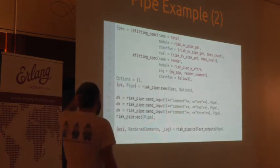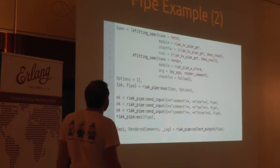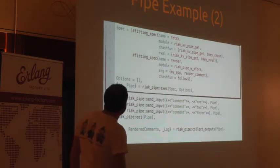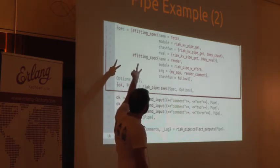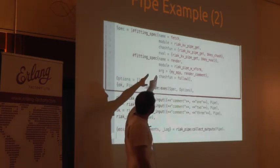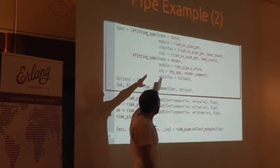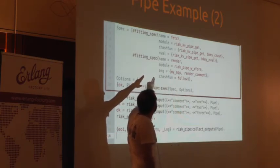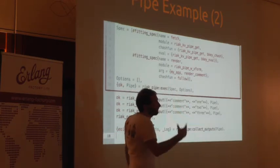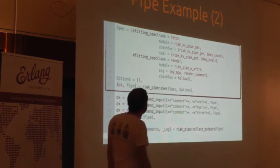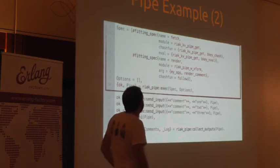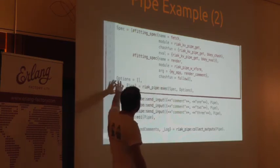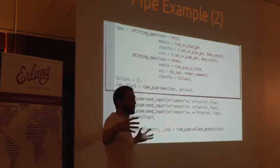How does that look in Erlang code? It's quite straightforward broken into three pieces. Piece number one: I'm creating two fittings. I tell it which module the function exists in that I want to execute for that fitting — for the transformation logic I want to perform — and I name it for logging and debugging purposes. If I want, I'll pass some custom arguments over to that fitting as well. This is your bootstrapping and setup for your pipeline.